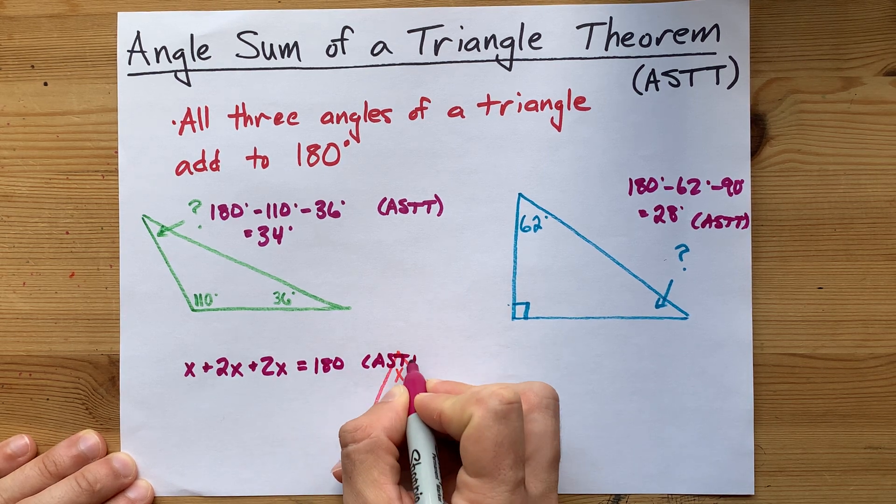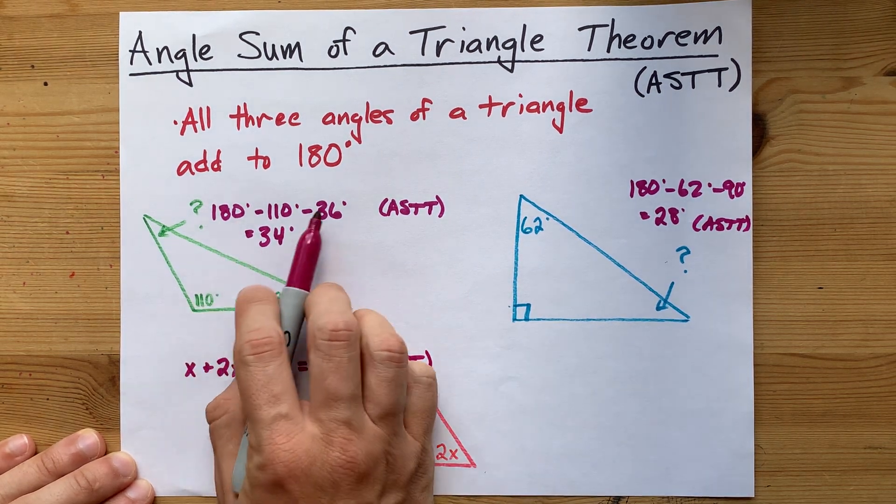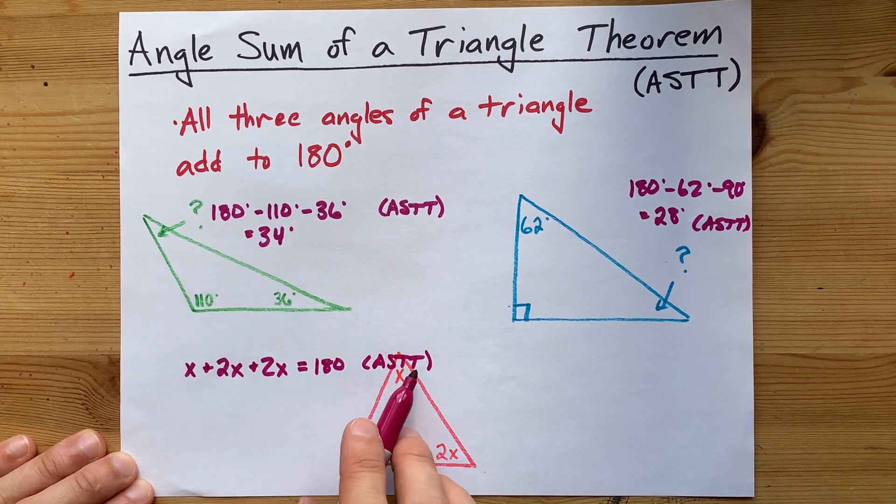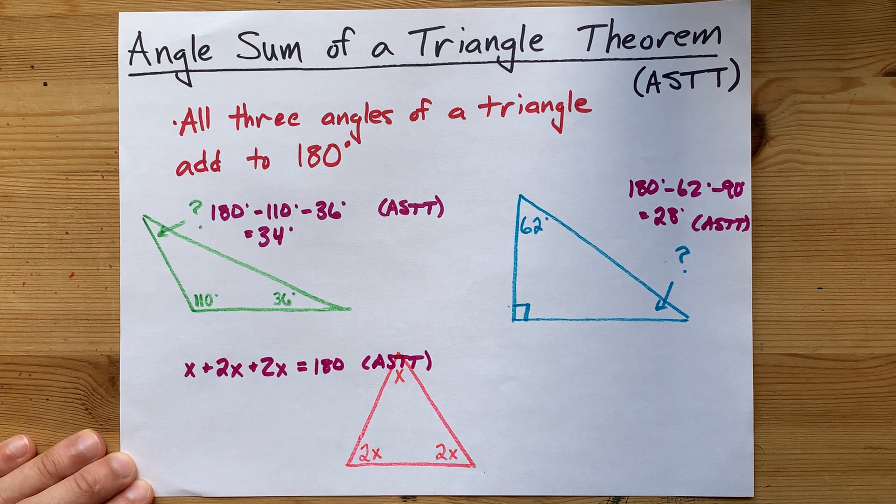This is a little less of a shortcut than simply taking two angles away from 180. You're still using the fact that all three angles add to 180, though.